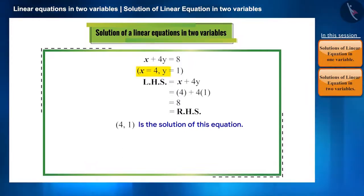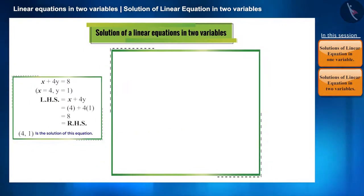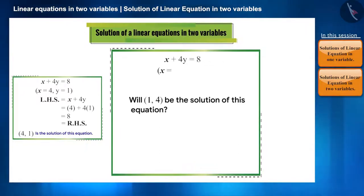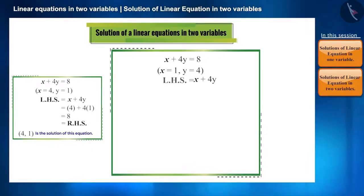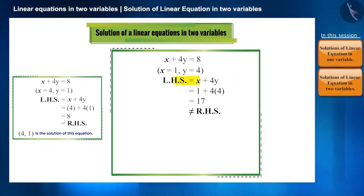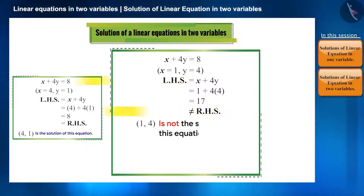Here in the parenthesis, the first value is of x and the second is of y. Will (1, 4) also be a solution of this equation? No, because keeping the value of x as 1 and y as 4, the value of the equation becomes 17, which is not equal to 8. RHS is not equal to LHS, hence (1, 4) is not a solution to this equation.